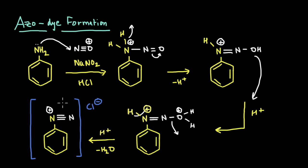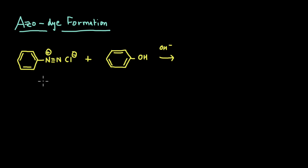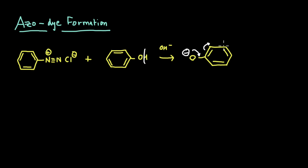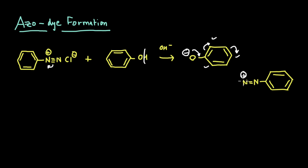Now that we have formed our diazonium salt, let's see how we can react it with phenol and aniline to get the azo dyes. To get our dye, we start with our diazonium salt and react it with phenol in a basic medium. The first step is that the OH negative will take off this hydrogen, giving a negative charge on the oxygen. Because of resonance, this negative charge forms a bond, the double bonds shift, and we have higher electron density at the ortho and para positions. We have resonance here as well, with this bond breaking giving a positive charge on this nitrogen — so you can think of this as an electrophile and this as a nucleophile.